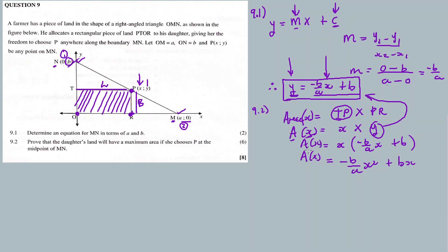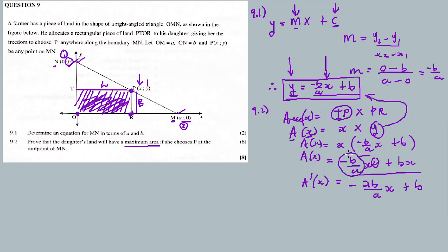This equals (-B/A)x² + Bx — the area in terms of x. Now, this expresses the area of the given rectangular shape in terms of x. To maximize the area of the given rectangle, we find the first derivative. The first derivative is: A'(x) = (-2B/A)x + B.